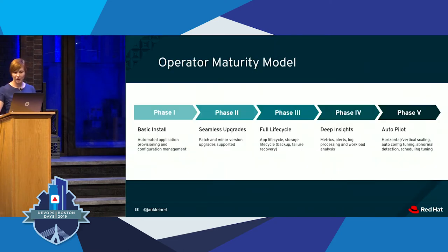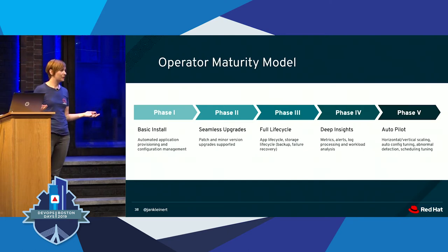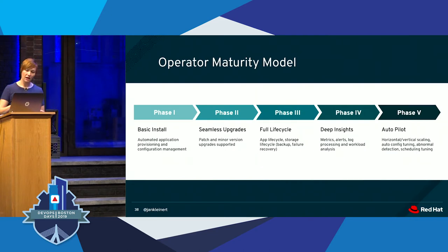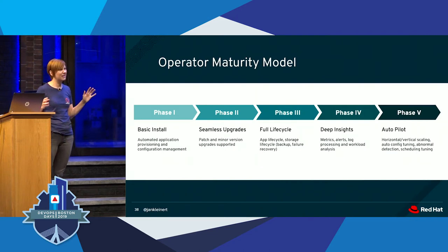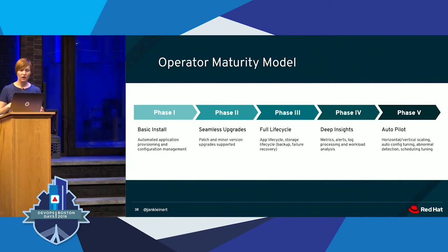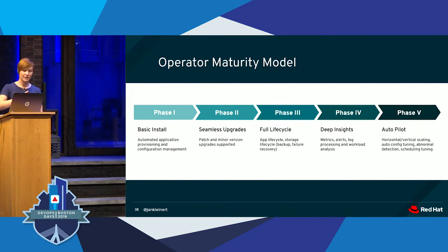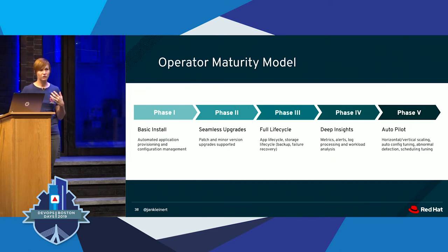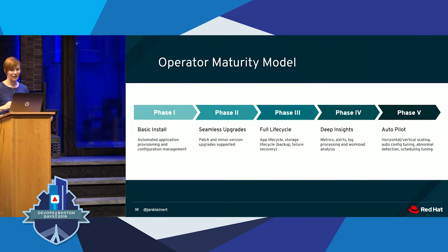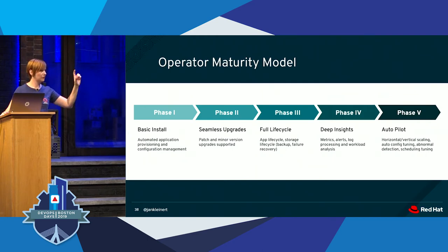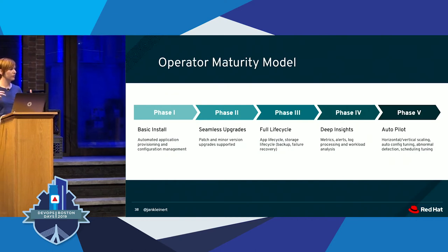A final note on the operator maturity model: not all operators are created equally, and sometimes that's by design. There's a five-phase maturity model. Phase one is the simplest—it just handles installation. It progresses through upgrades and full lifecycle management. Phase four includes metrics, logging, and metering. Phase five handles just about everything. On Operator Hub, operators typically list which phase they support, so you know what you're getting.